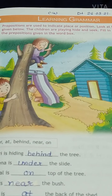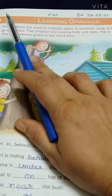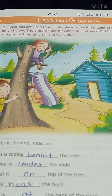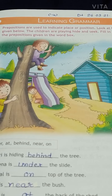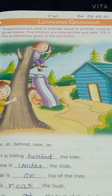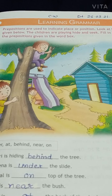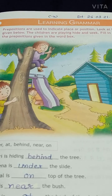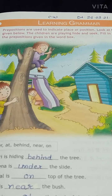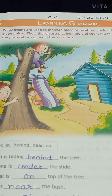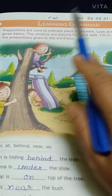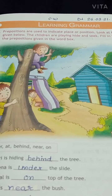Dear students, what is prepositions? Preposition — pre means before and position means place. A preposition is a word placed before a noun or pronoun to show its relation to another word in the sentence. Prepositions are used to indicate place or position. Place or position को indicate करने के लिए preposition का use किया जाता है.